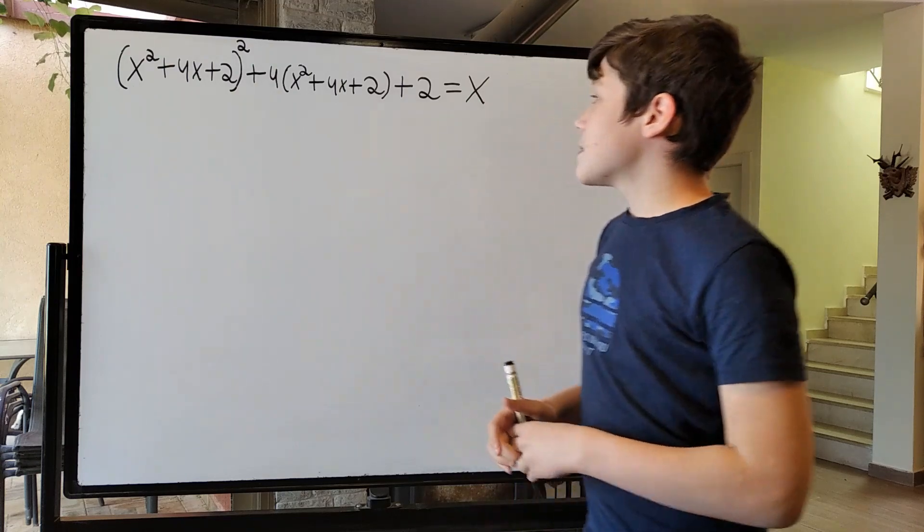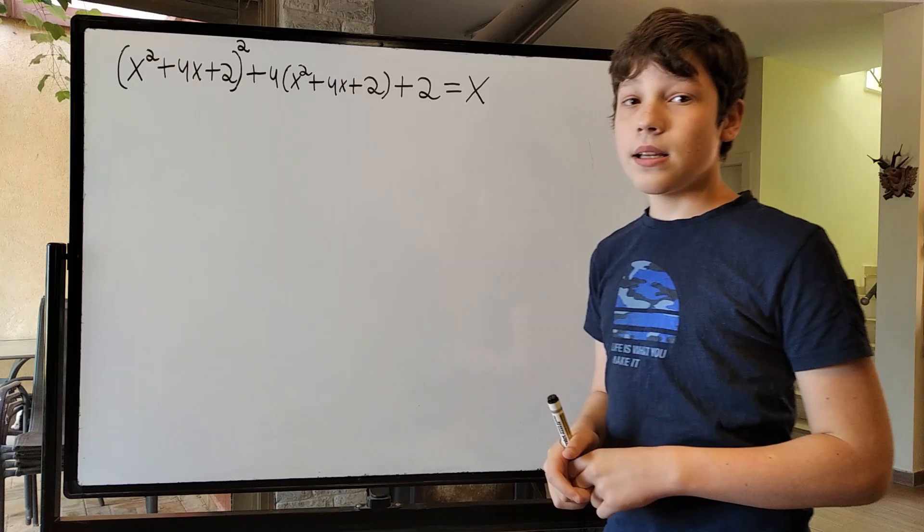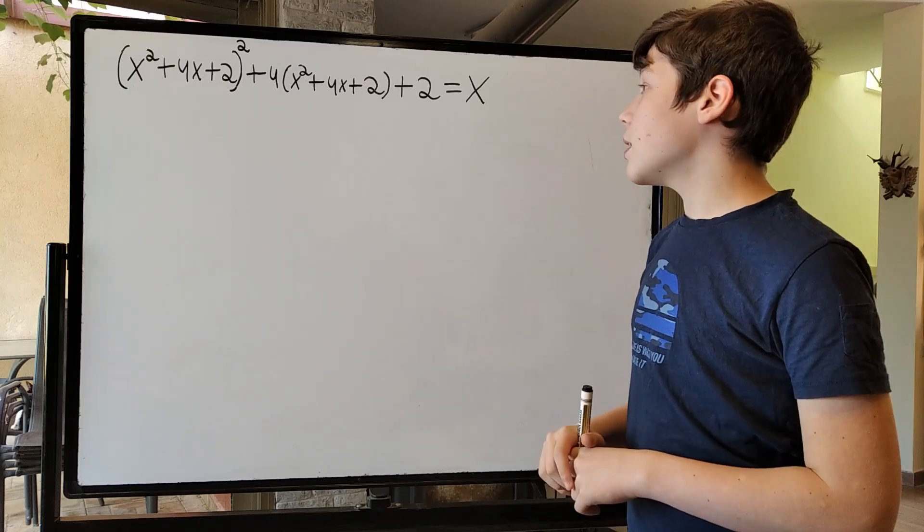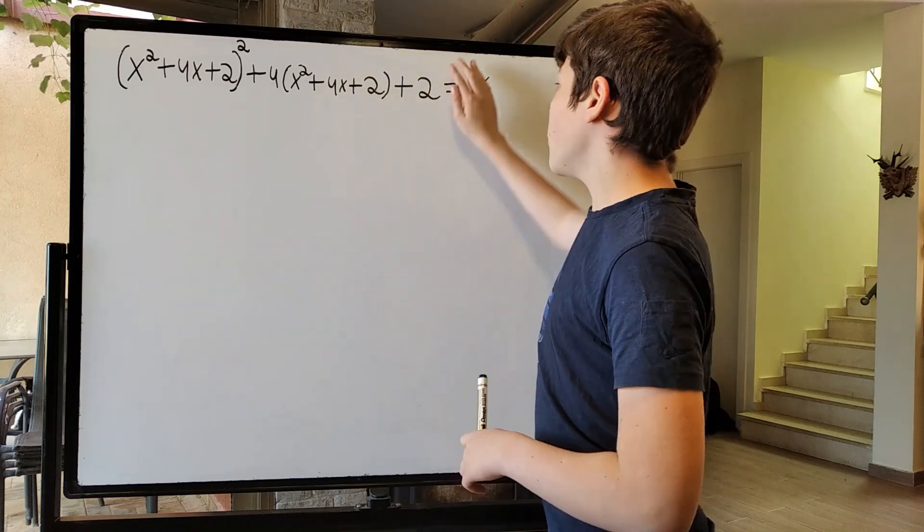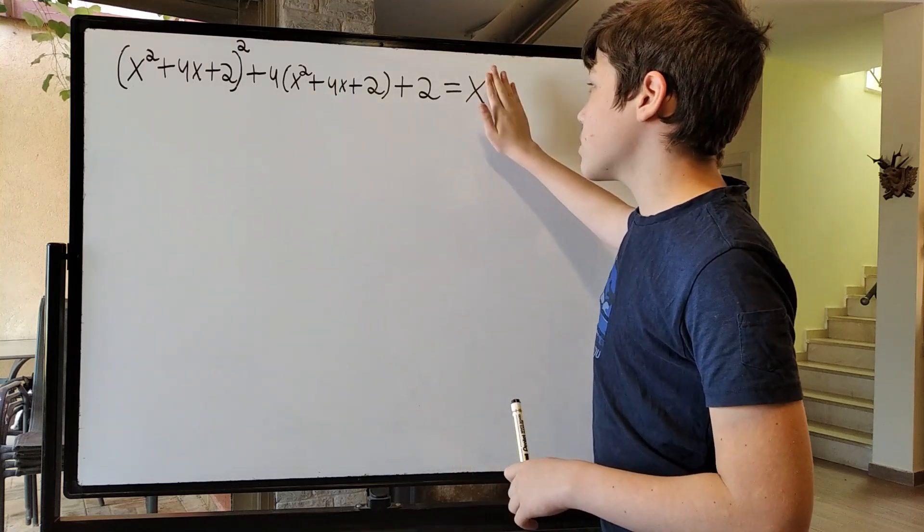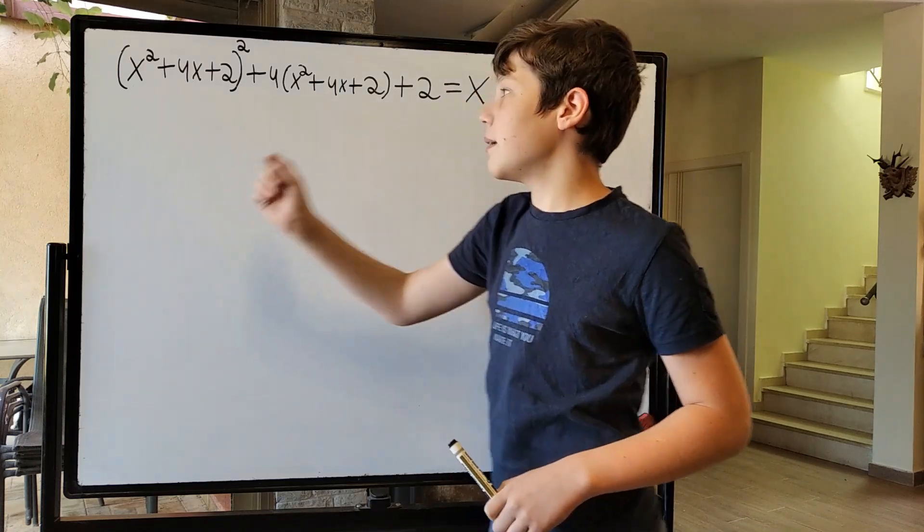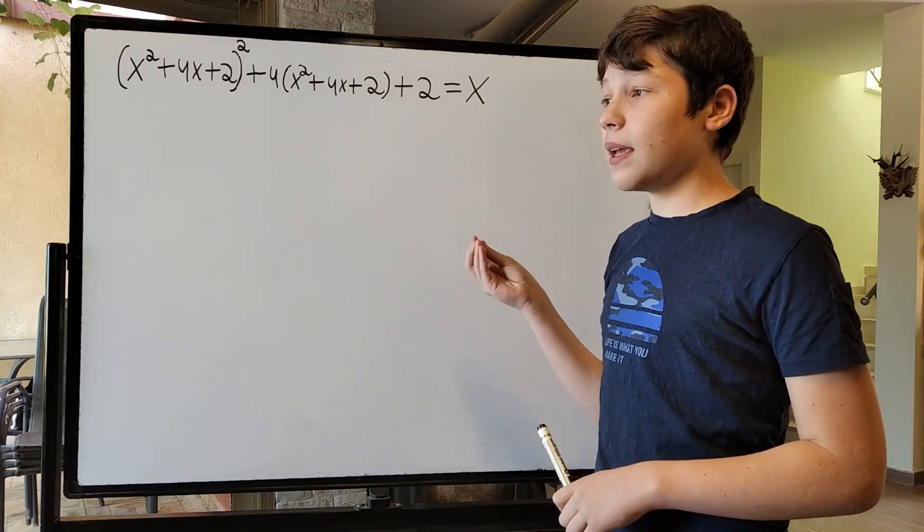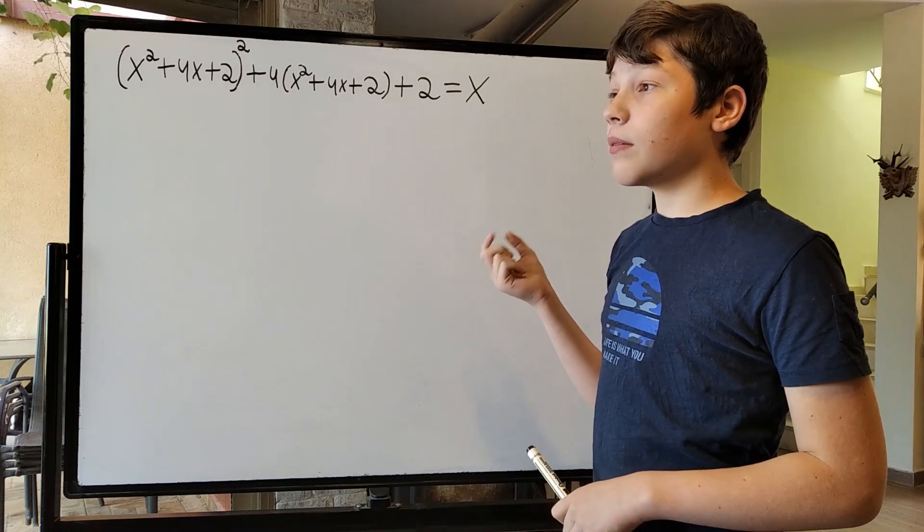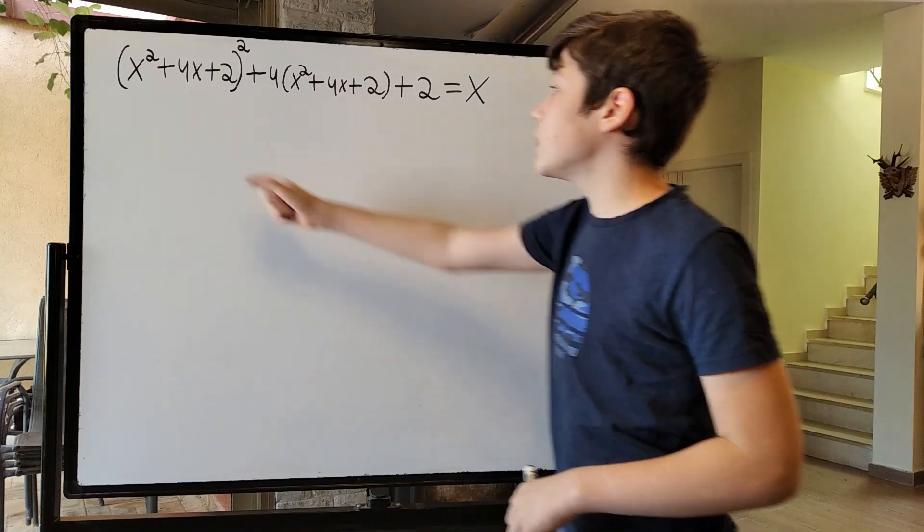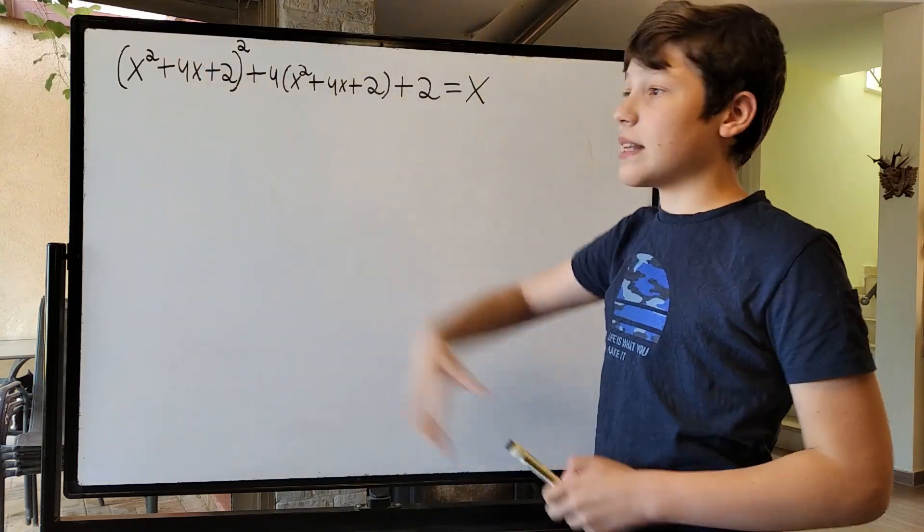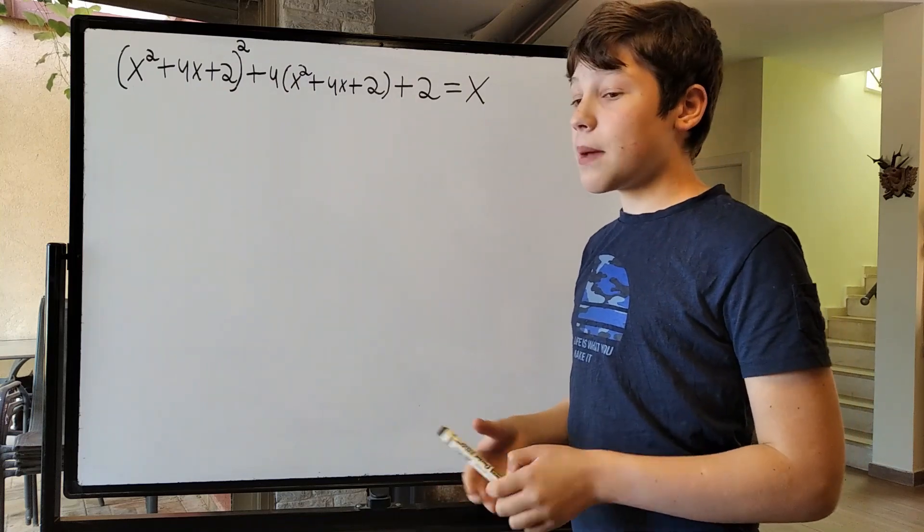So let's begin. The first thing I noticed is, if we ignore this equal to x and focus on this side, this looks to me like something being very close to something squared. Because if we look at x squared plus 4x plus 2 as a parameter, for example a...